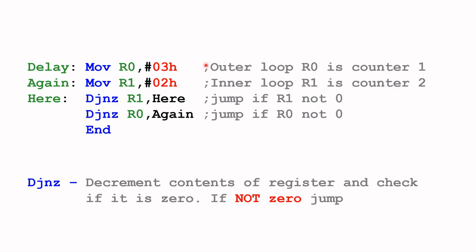Now I'd like to examine this delay routine. I've repeated the code with some minor changes — I've used smaller counter values, and instead of RET I've used END because I'm going to show a standalone demonstration. Register R0 is counter one and R1 is counter two.